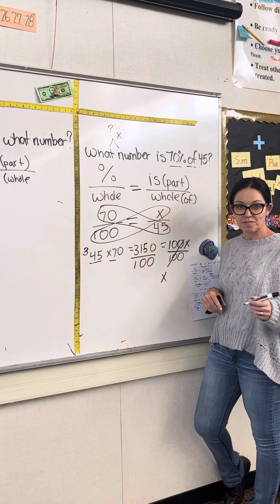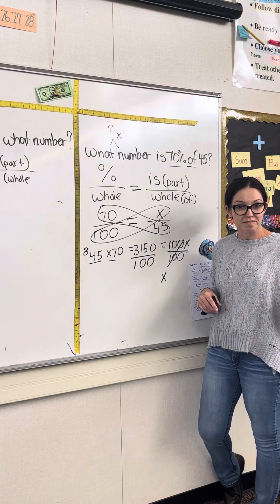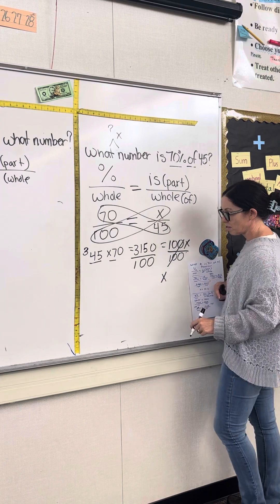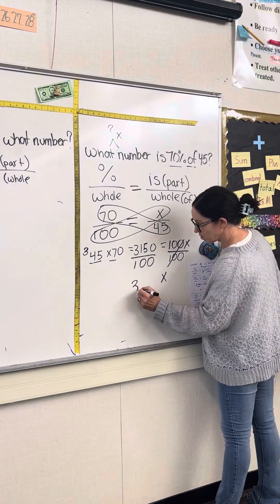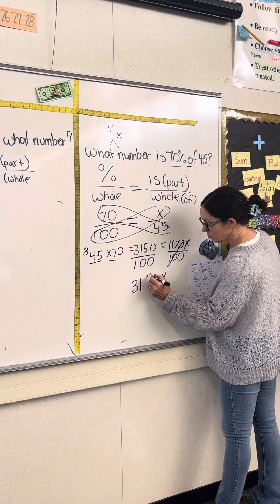Now I'm dividing 100 into 3,150, which is just moving decimals. How many decimals are we gonna move it? 2. So my answer will be 31.5.